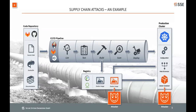The attacks we're focusing on today are those that introduce malicious images into our production cluster. This can happen either by an attacker directly accessing the production cluster and introducing malicious Docker images — a Bitcoin miner, for example — or indirectly by introducing malicious Docker images into our registry, which then get pulled into the production cluster.